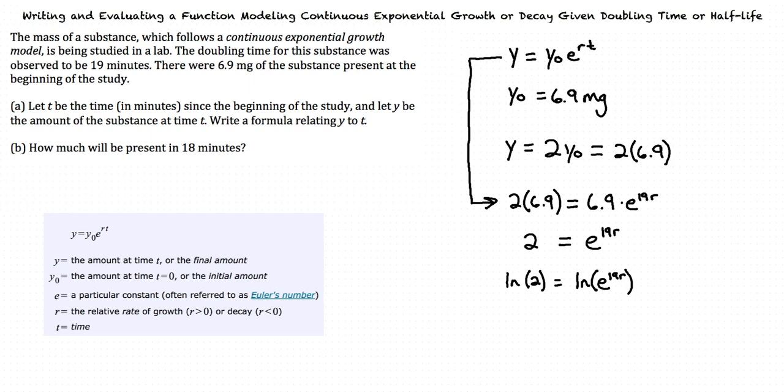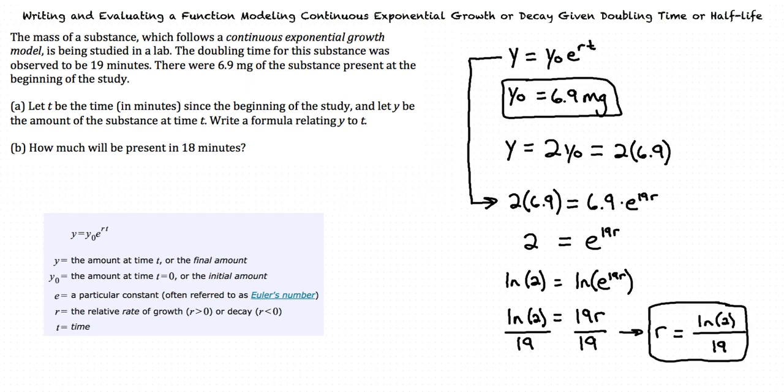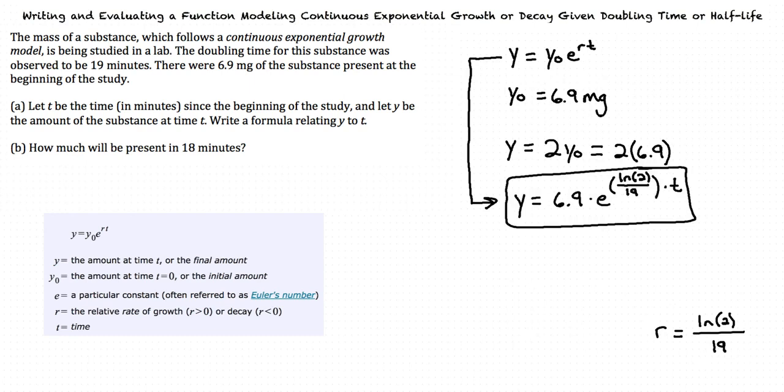So in our example, we are left with natural log of 2 equals 19 times r. If we divide both sides by 19, we see that r equals natural log of 2 divided by 19. Now that we have found y sub 0 and r, we can substitute them into our equation, and that is the answer to part a.